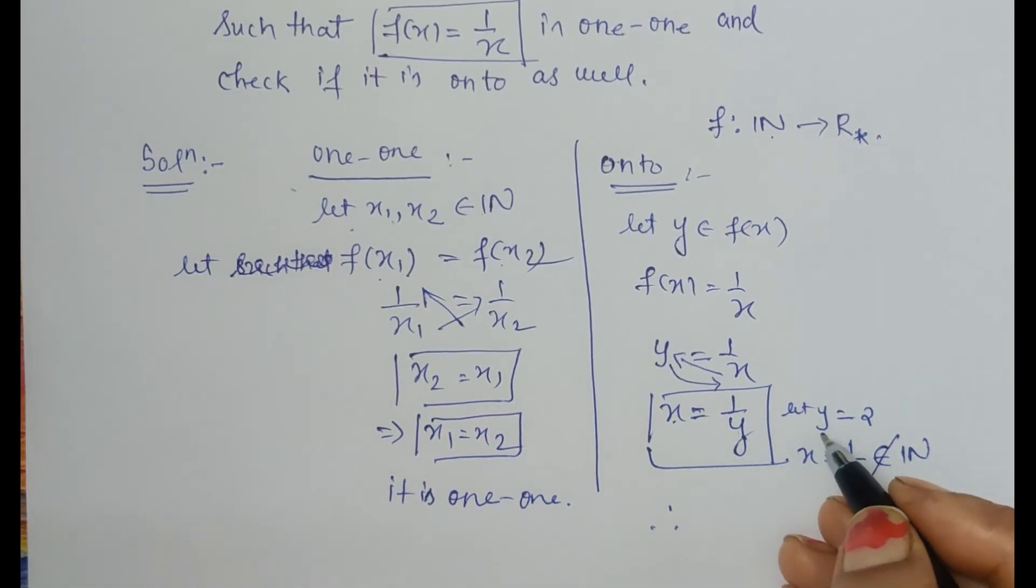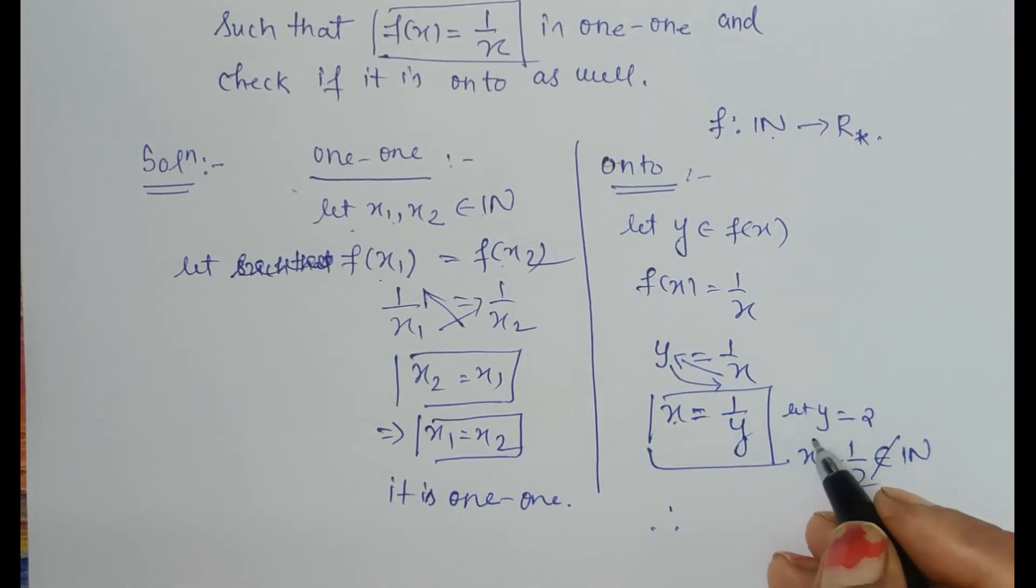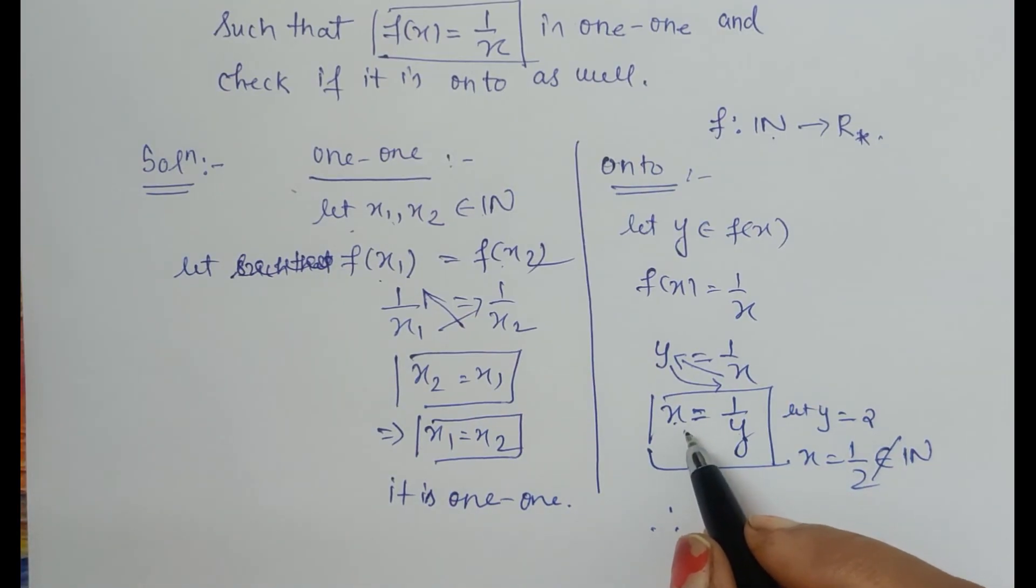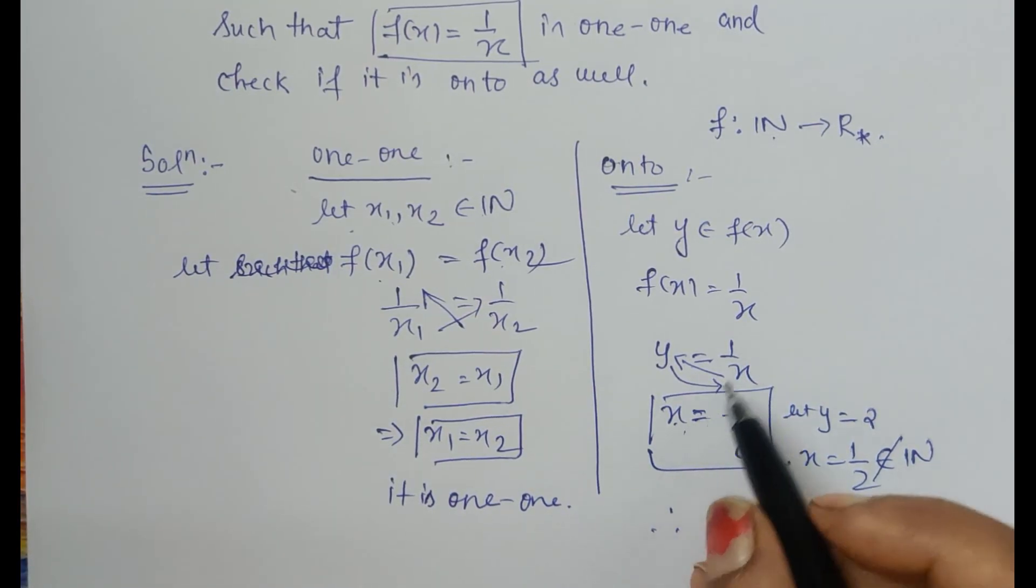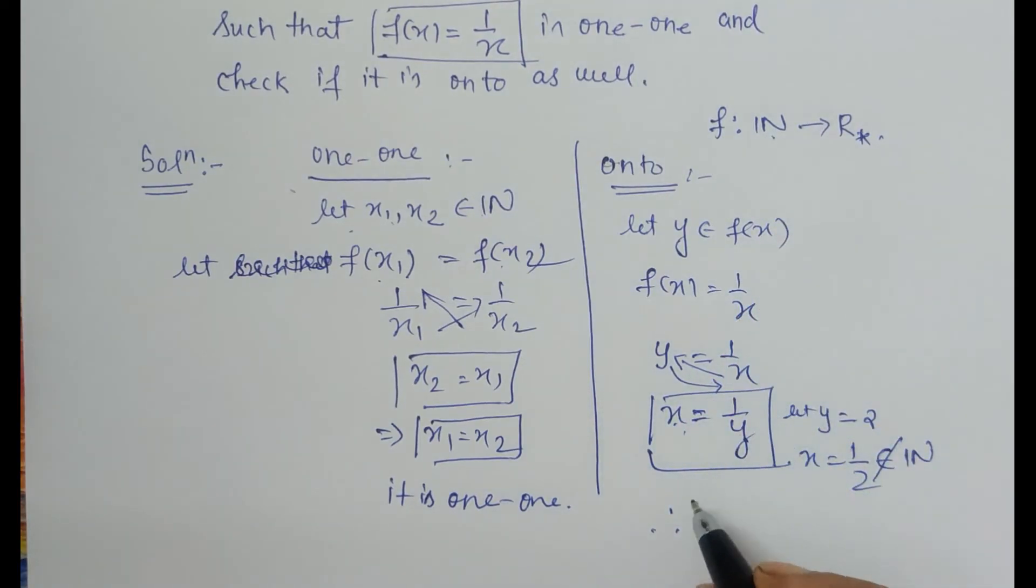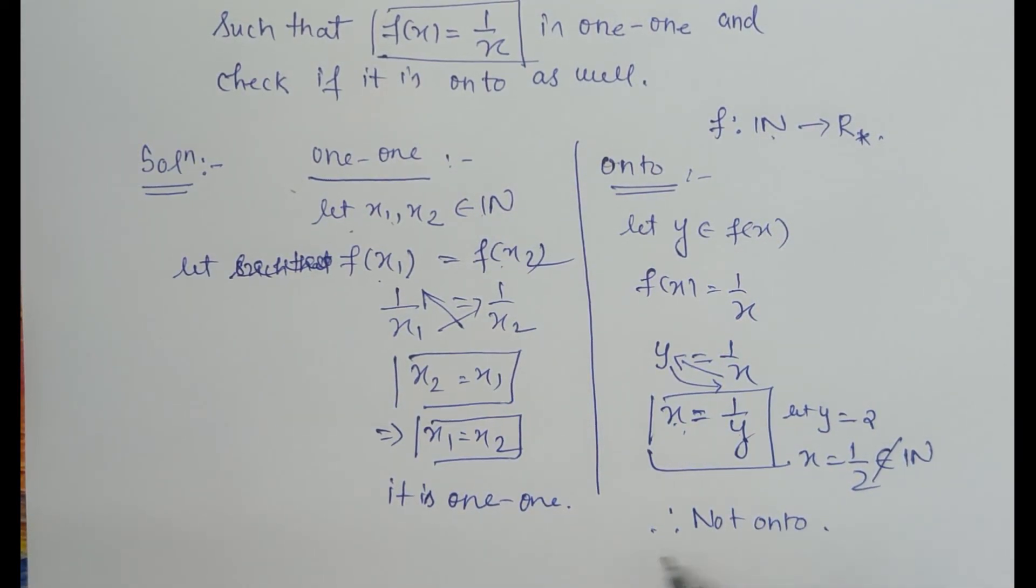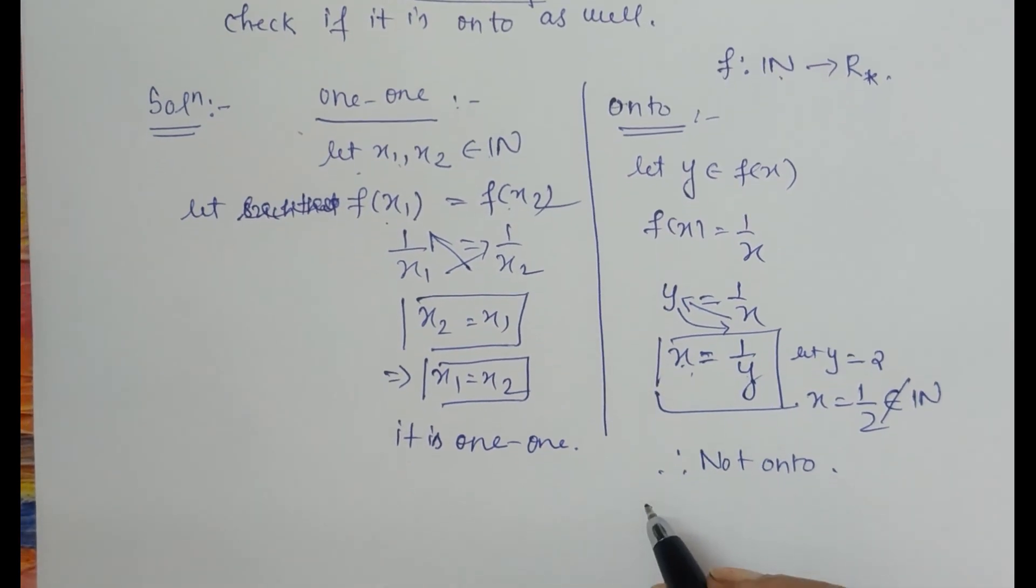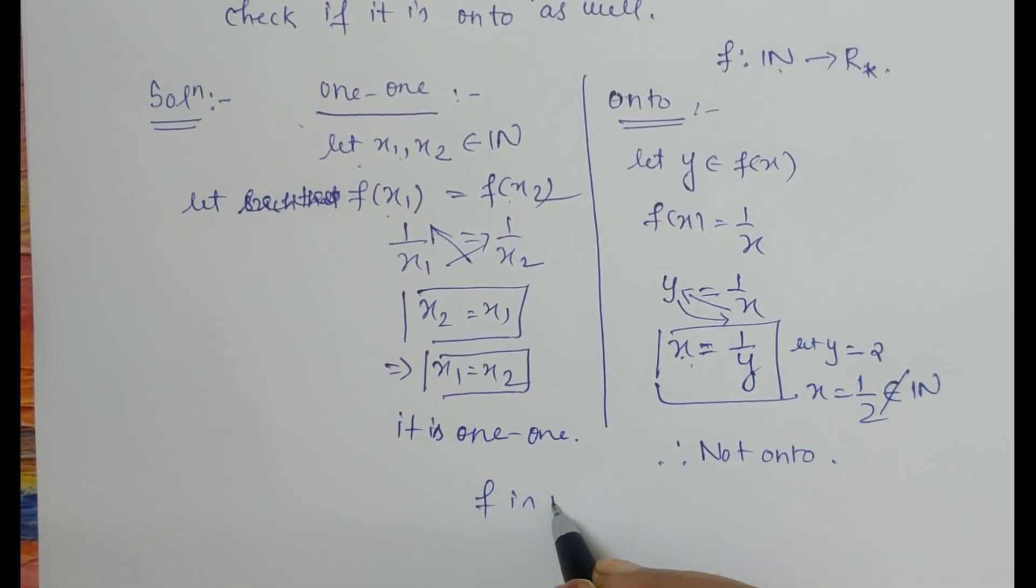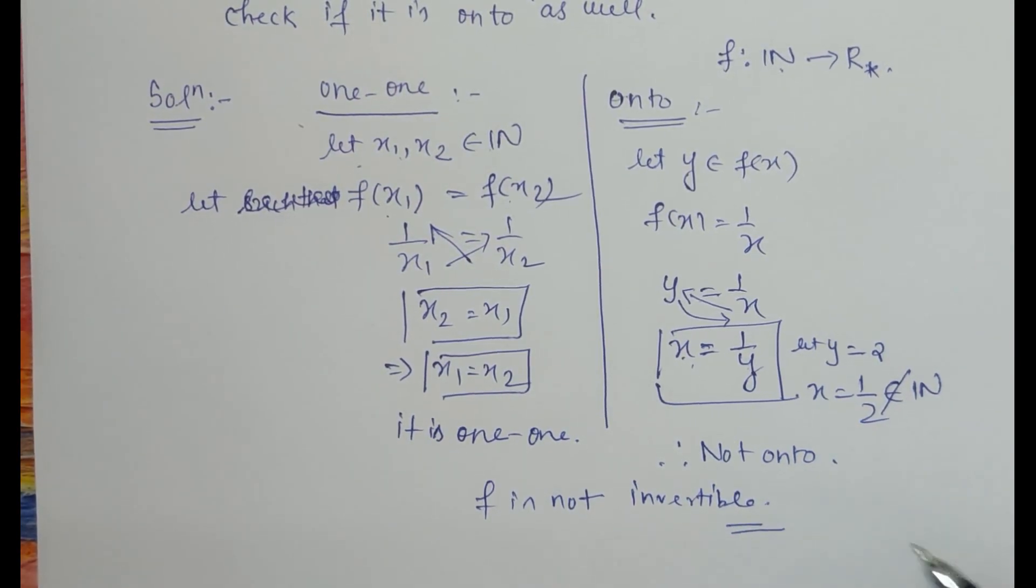Therefore, since we have one such counter example, and like that we have many counter examples to prove that it will not have an element in the domain which is the set of natural numbers, therefore it is not onto. Hence the function is also not invertible. So f is not invertible. Thank you.